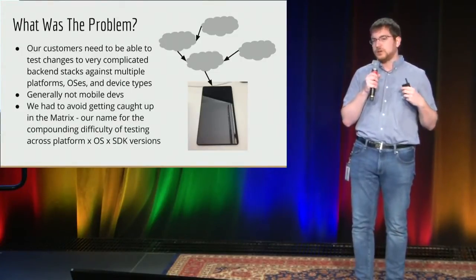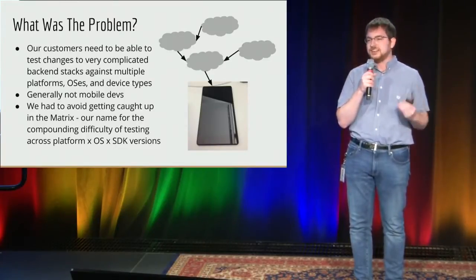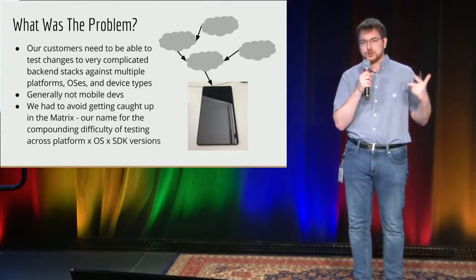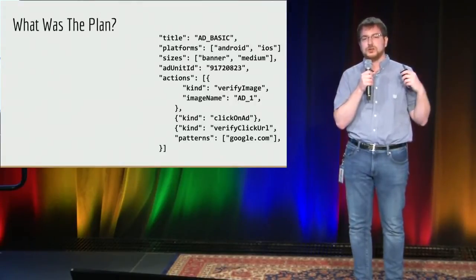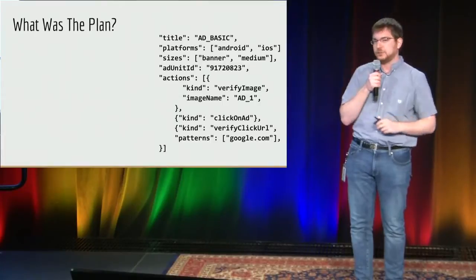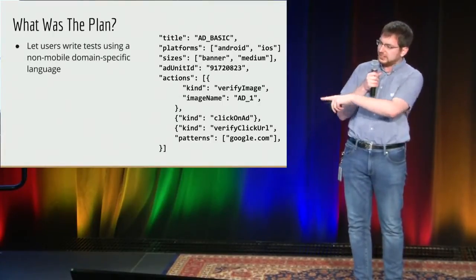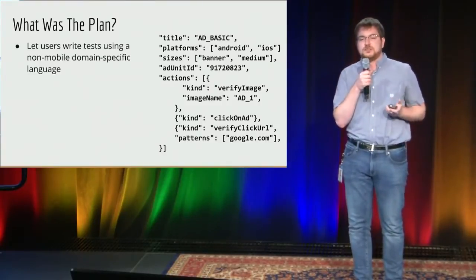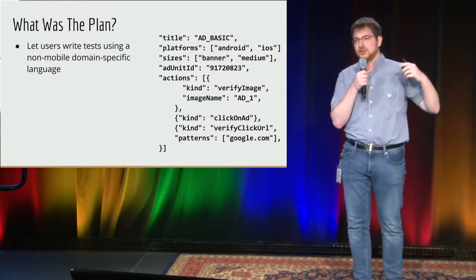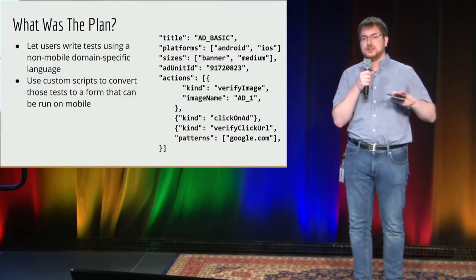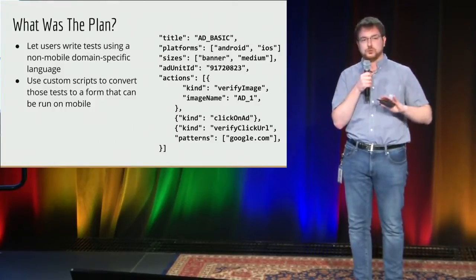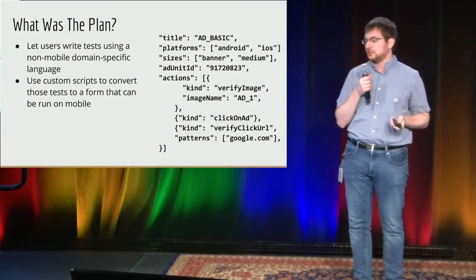We had to avoid getting caught up in what we call the matrix, which Juergen talked about a bit in the keynote — basically this idea that you have multiple operating systems, multiple SDK versions, multiple device types, and a combinatoric explosion of things you have to test that gets really out of hand quickly. So our plan: we decided pretty early on to let our users write tests in a non-mobile domain-specific language that looked a lot like JSON. These are data-driven tests that lay out the most important parts of a test — what ad to load, what sizes to load it on, what to do with that ad — and then we, under the hood, ran those on mobile.